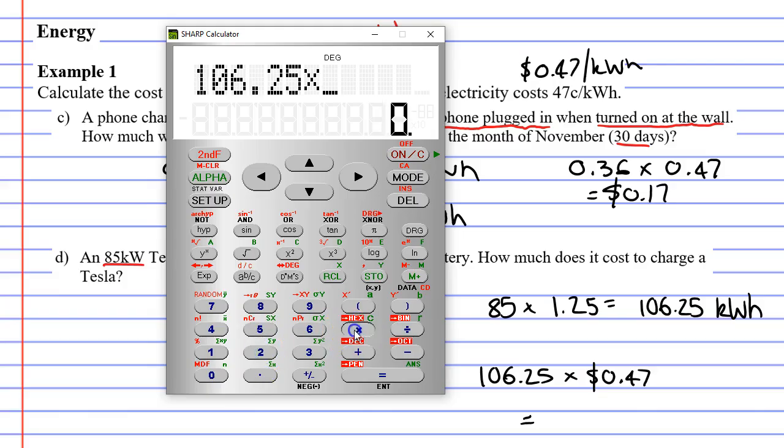106.25 times 0.47 equals, and it's almost $50, $49.94, I'm going to write.